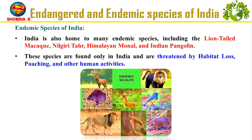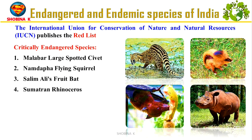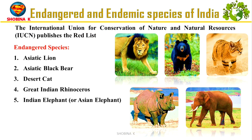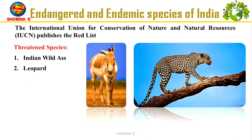The International Union for Conservation of Nature and Natural Resources (IUCN) is the global authority on the conservation status of species. The IUCN Red List categorizes species based on their extinction risk. Critically endangered species include the Malabar large-spotted civet, Namdapha flying squirrel, Salim Ali's fruit bat and Sumatran rhinoceros. Endangered species include the Asiatic lion, Asiatic black bear, desert cat, great Indian rhinoceros and Indian elephant. Threatened species include the Indian wild ass and leopard.